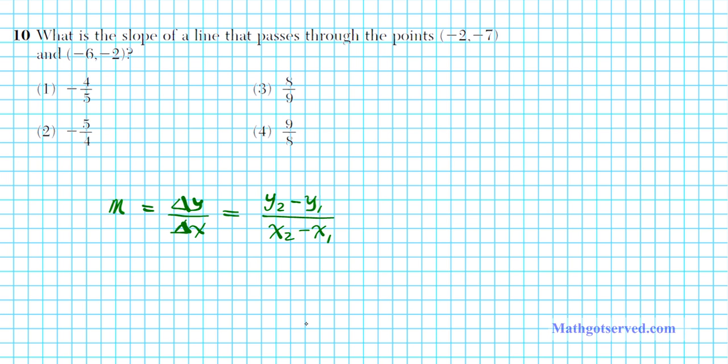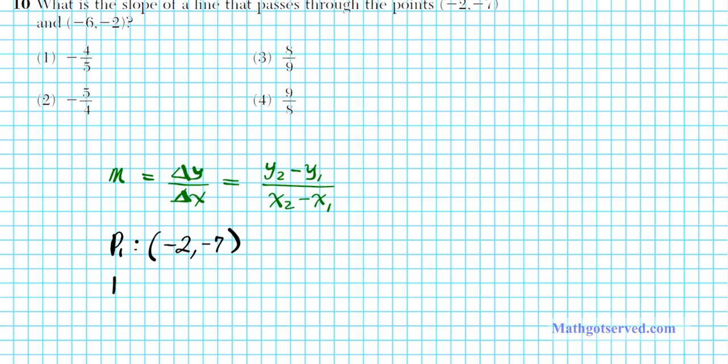Now let's label our points before we apply this formula. So let's call p1, the first point, negative two, negative seven. And then the second point, p2, let's call that negative six and negative two. So why did I label my points p1 and p2? Well, I want to make sure that I get my x1, x2, y1, y2 distinct. I don't want to confuse them. So for p1, we have x1, this is x1 and this is y1. And then for p2, this is x2 and y2.